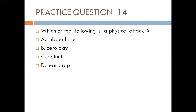Question fourteen. Which of the following is a physical attack? A. Rubber hose, B. Zero day, C. Botnet, D. Teardrop. A zero day attack exploits vulnerabilities not yet discovered by developers. Botnet is a denial of service attack. Teardrop is also a denial of service attack where oversized packets are sent to a node that cannot process them, causing it to crash. That leaves us with A — rubber hose, which is a physical attack where people physically attack a victim to force them to reveal sensitive information such as an ATM PIN. So the answer is A.